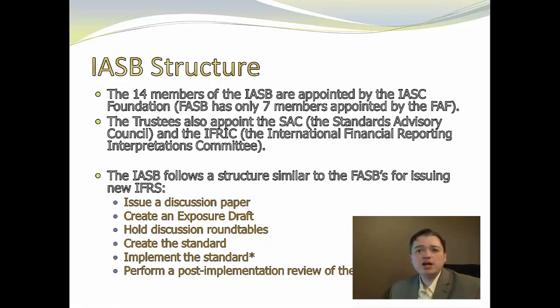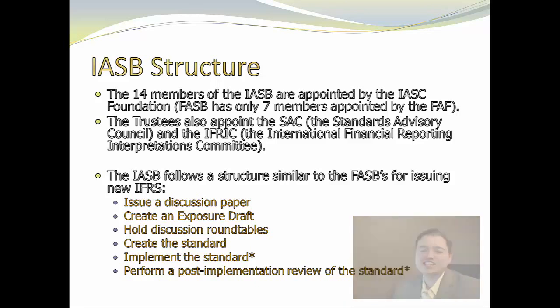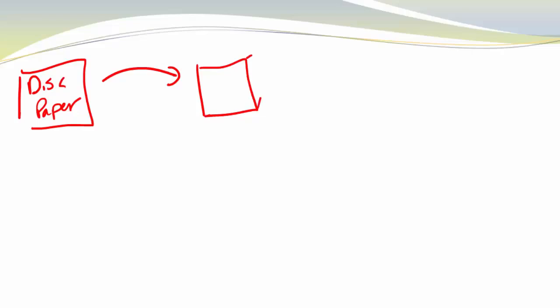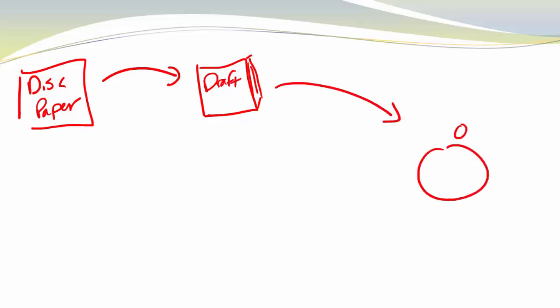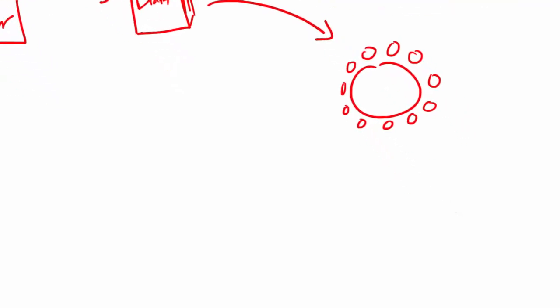The process for setting GAAP under IFRS is very much the same as US GAAP, with only a couple of differences. Just like US GAAP, they don't create a memorandum — instead they call it a discussion paper, which says this is what we're thinking the rule should be. From that, they can create a draft. Just like US GAAP, after they set the draft, they hold round table discussions where people can share what they think and send in letters. They go through a process from draft through the round tables, where they can set the actual standard.